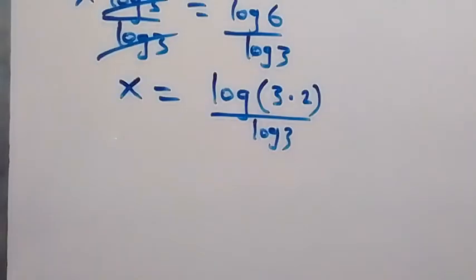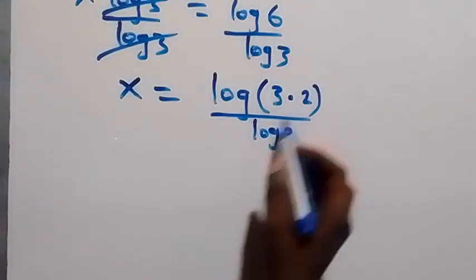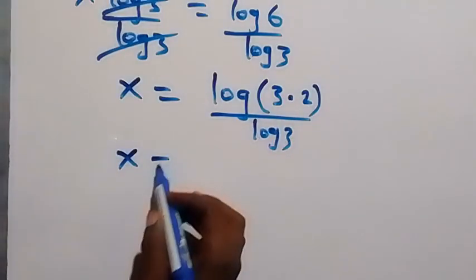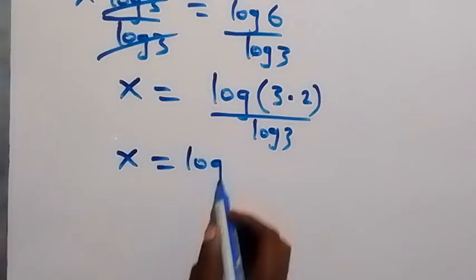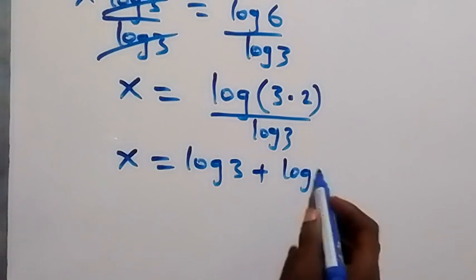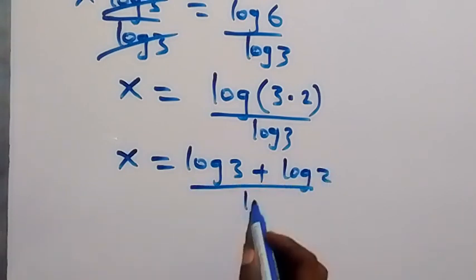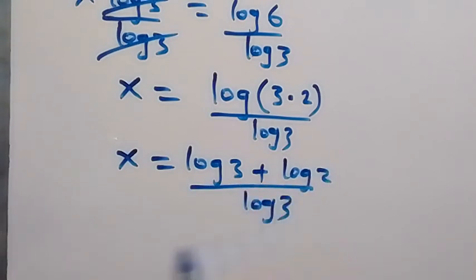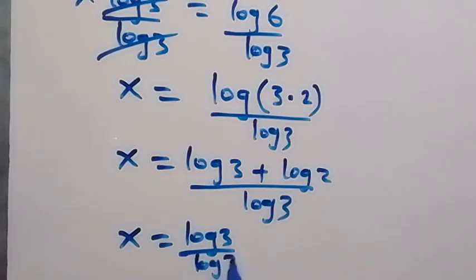From here, and also from the law of logarithms, we can separate this log into two logs. This will be x = (log 3 + log 2) all over log 3. And which we can separate as x = log 3 over log 3 plus log 2 over log 3.